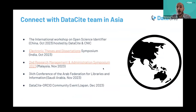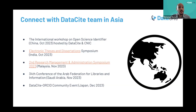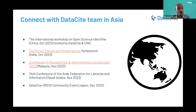Here is a snapshot of upcoming DataCite activities within the Asian regions. We have the International Workshop on Open Science Identifiers in China this October. We are attending and presenting at the ATD conference in India, and at the Research Management Administration conference in Malaysia this November. We are attending the Arab Federation conference in Saudi Arabia this November as well. At the end of the year, we are hosting a DataCite and ORCID community event in Japan in December.